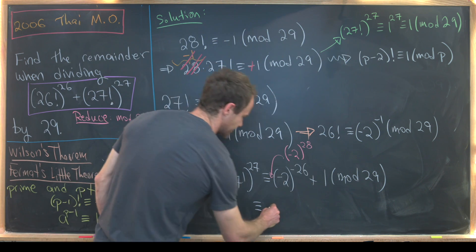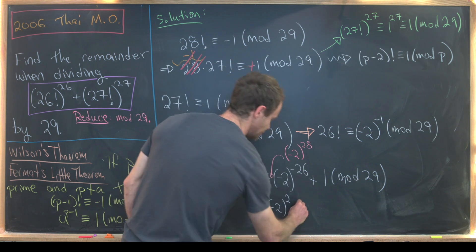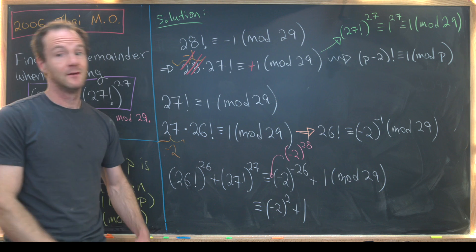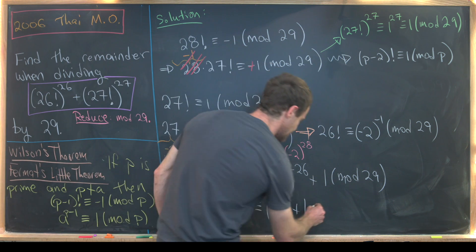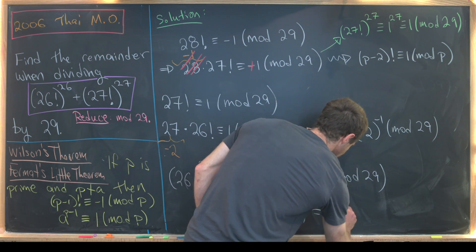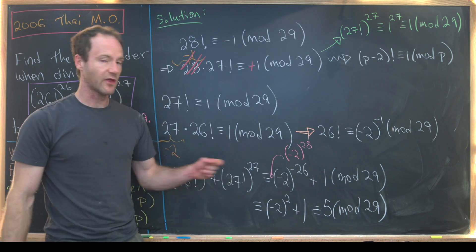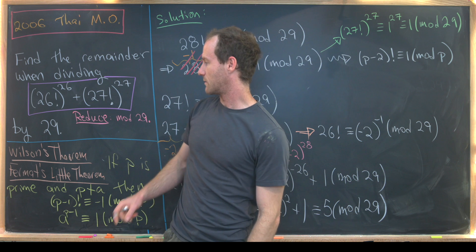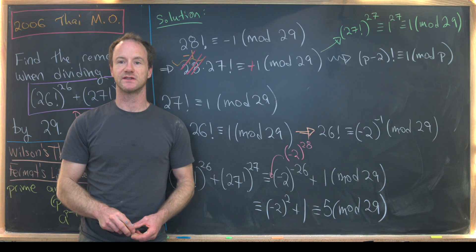This is going to be congruent to minus 2 to the 28 minus 26. That's 2 plus 1. But now we've got really simple arithmetic. Minus 2 squared is 4 plus 1 is 5. So the final answer is 5 mod 29. So in other words, when we divide this crazy number by 29, we get a remainder of 5. And that's a good place to stop.